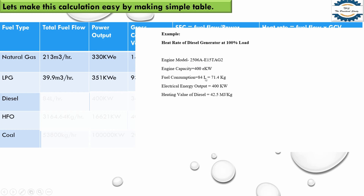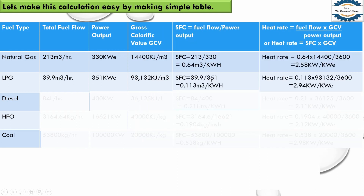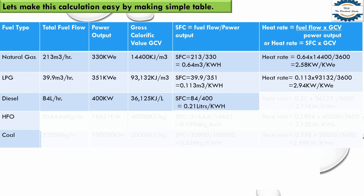For diesel, I selected a diesel engine model 2506A. Its engine capacity is 400 kilowatt and its electrical energy output is also 400 kilowatt. Fuel consumption is 84 liters per hour, or 71.4 kg per hour. The GCV of diesel is 36,125 kilojoule per liter. Similarly, for specific fuel consumption we divide fuel flow by power output, and for heat rate we multiply specific fuel consumption by GCV and divide by 3,600.